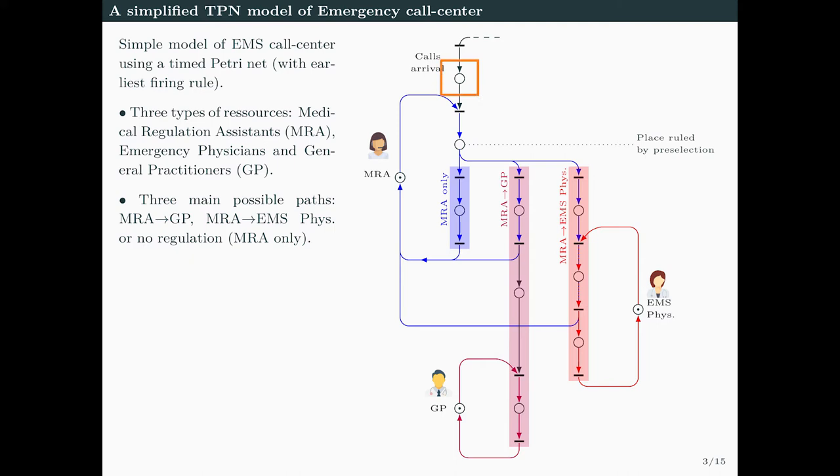When a call arrives, there are three main possible paths. Either the patient will need the emergency physician, the GP, or sometimes the call is an error and doesn't need any doctor at all. For example, suppose a patient token arrives needing to talk to a GP. As soon as an MRA is available, the first transition fires a token in the pre-selection place, and the patient is routed to a conversation place where the MRA fills up basic information and asks for symptoms, which could take a minute or two. When this conversation is over, the MRA is released while the patient is pushed to a waiting room for the GP.